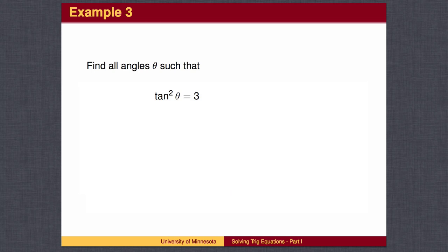This problem requires us to take a square root. Tangent θ is a variable expression, so solving this equation is similar to solving x squared equals 3. First, we take a square root of both sides, then look up the unit circle solutions and add and subtract full circles.